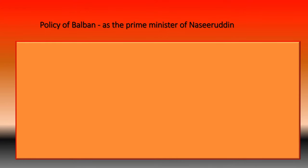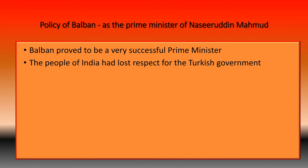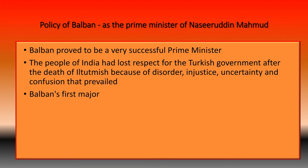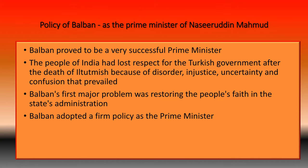As the Prime Minister of Nasiruddin Mahmoud, Balban proved to be a very successful Prime Minister. The people of India had lost respect for the Turkish government after the death of Iltutmish, due to the disorder, injustice, uncertainty, and confusion that prevailed. Balban's first major problem was restoring the people's faith in the state's administration, and he adopted a firm policy to achieve this.